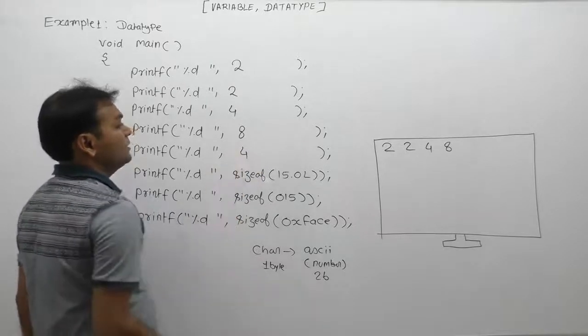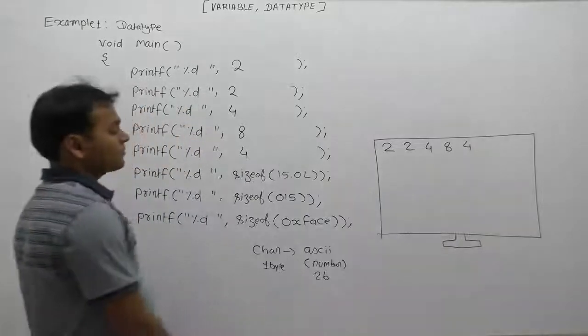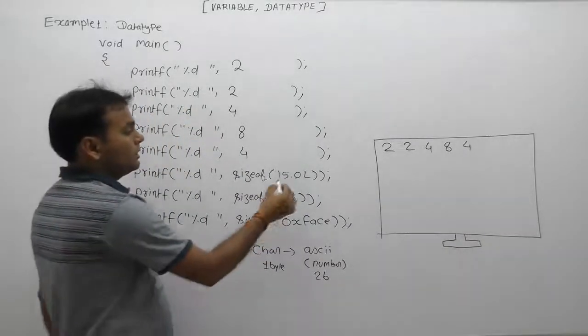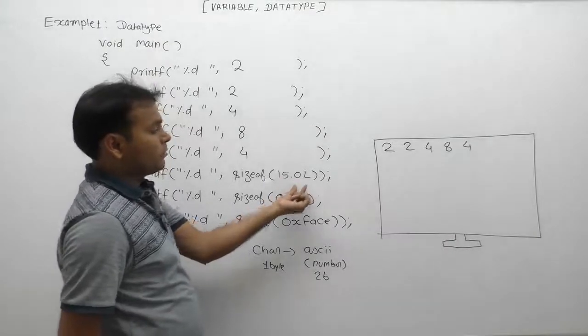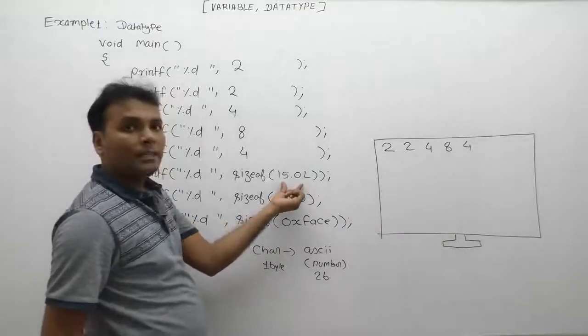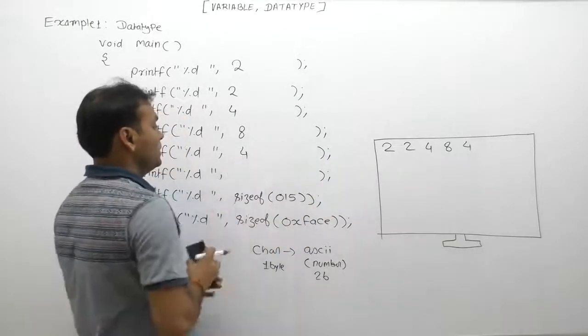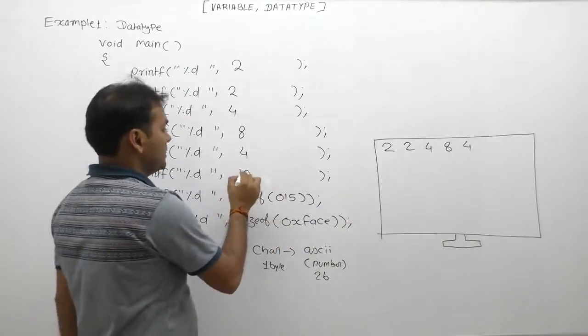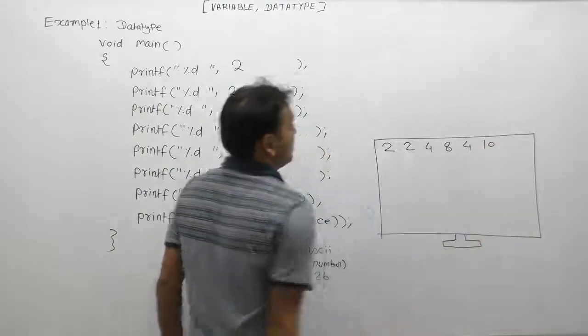15.0L, where 'L' means long. Finally, the value is of type long double. What is the size of long double? Long double will take 10 bytes in C language, therefore this printf will display 10.